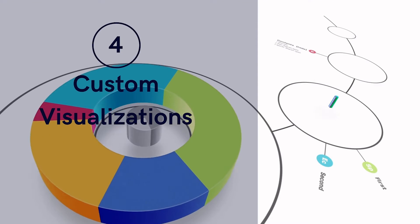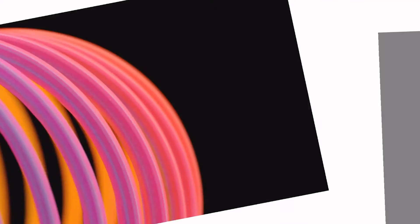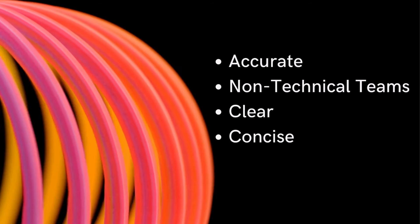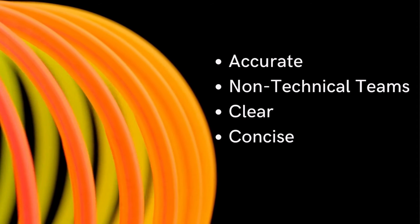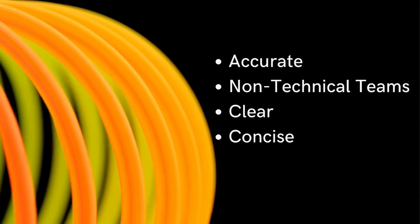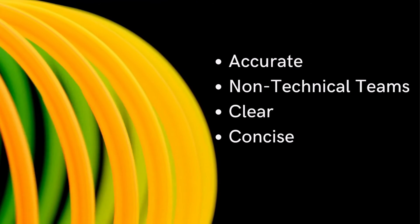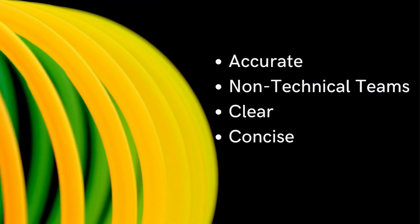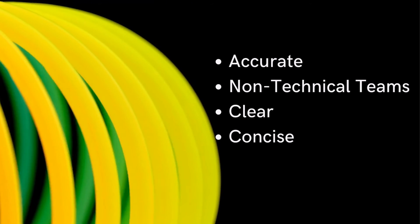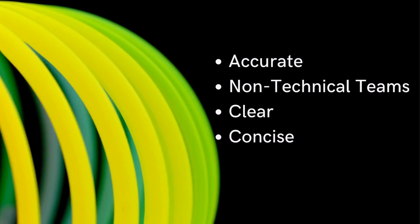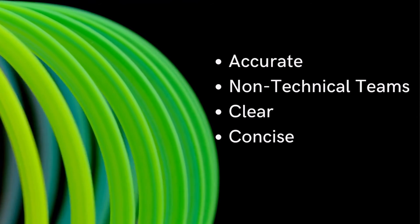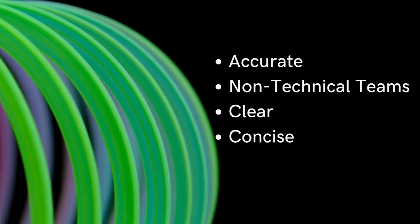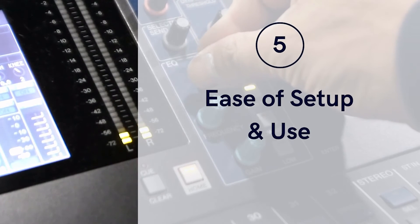Number four is support for custom visualizations. A key element to differentiating tracking tools is their ability to represent experiments visually. A good visual representation will enable you to analyze and interpret results quicker. Additionally, the right graph can help communicate results to others, especially to stakeholders with a non-technical background. Visualization is an extremely effective way to show complex data concisely and clearly, though some tools offer great visual capabilities while others do not.